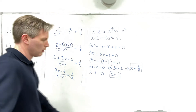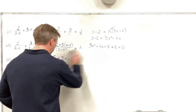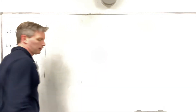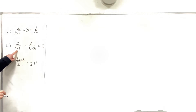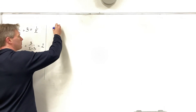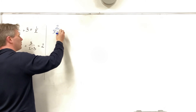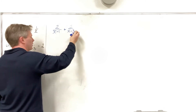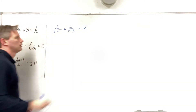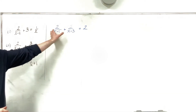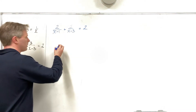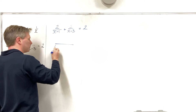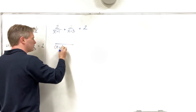That's one done. As we'll see, all these questions follow a similar pattern. Problem 2: 2 all over x minus 1, plus 3 all over x minus 3, is equal to 2. Again, the first thing I'm going to do is bring the two terms on the left together. The common denominator of x minus 1 and x minus 3 will be their product: x minus 1 times x minus 3.